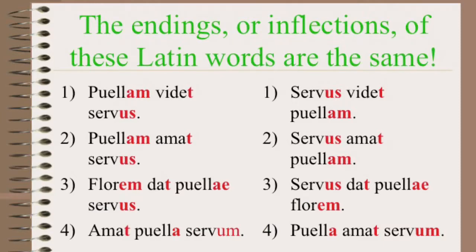Now let's look at sentence number two: Servus amat puellam — the servant loves the girl. That's the original sentence. The revised version on the left has Puella amat servus. Because the inflections are the same, and because I learned in sentence one that -us shows that the noun must be the subject, I know that servant is still the subject in sentence number two, even when it is the last word in the sentence. The one new vocabulary word is amat, which means loves. Both versions of sentence number two say the servant loves the girl.